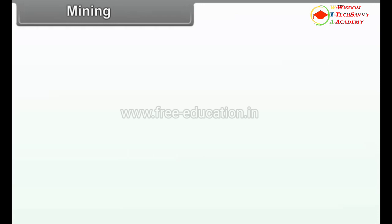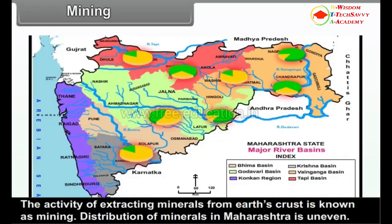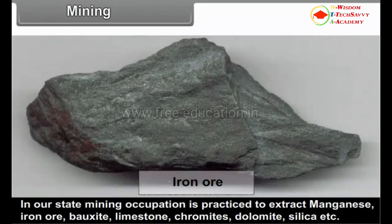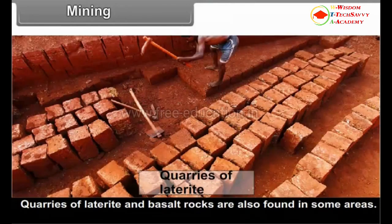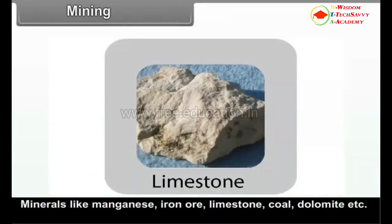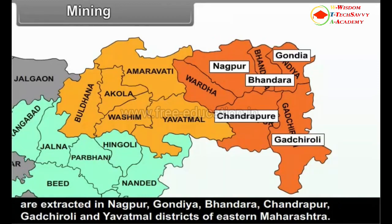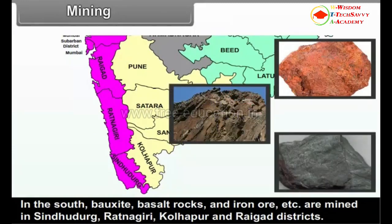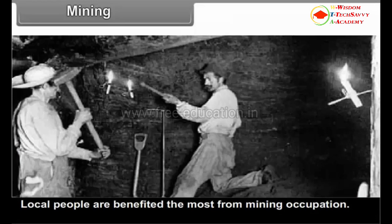6. Mining: The activity of extracting minerals from earth's crust is known as mining. Distribution of minerals in Maharashtra is uneven. In our state, mining occupation is practiced to extract manganese, iron ore, bauxite, limestone, chromites, dolomite, silica, etc. Quarries of laterite and basalt rocks are also found in some areas. Minerals like manganese, iron ore, limestone, coal and dolomite are extracted in Nagpur, Gondiya, Chandrapur, Chandrapur, Gadchiroli and Yavatmal districts of eastern Maharashtra. In the south, bauxite, basalt rocks and iron ore are mined in Sindhudurg, Ratnagiri, Kolhapur and Raigad districts. Local people are benefitted the most from mining occupation.